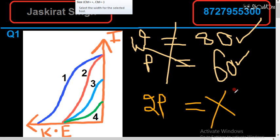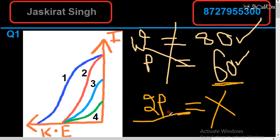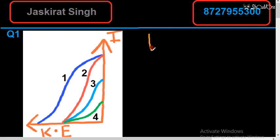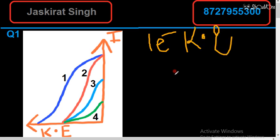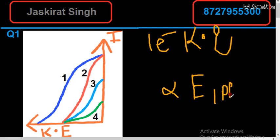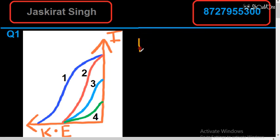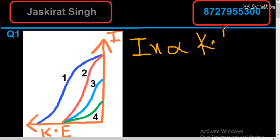If the number of photons increases — that is, intensity increases — that will not increase the kinetic energy. Kinetic energy of one electron depends on the energy of one photon only. Only one photon will accelerate one electron. Therefore, on increasing the intensity, the kinetic energy will not change. Kinetic energy depends upon the frequency of radiation only.